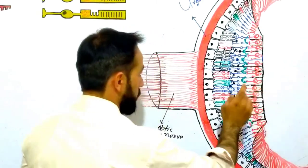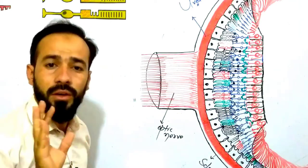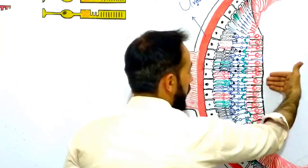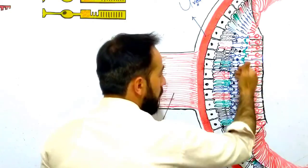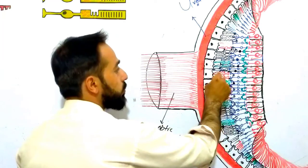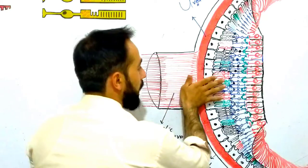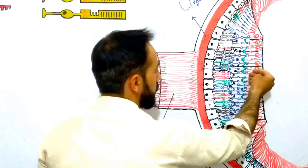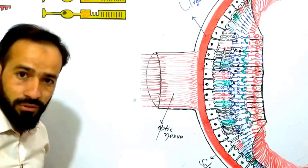Once again: the retinal pigment epithelium is the deepest layer of your retina. The most superficial layer, where the light falls, is your ganglion layer, then come the bipolar cells, then the rods and cones. Here the rods and cones are activated and convert chemical messages to action potential, which is carried by bipolar cells to ganglion cells, and from ganglion cells to your nervous system as images.